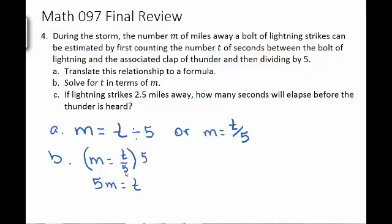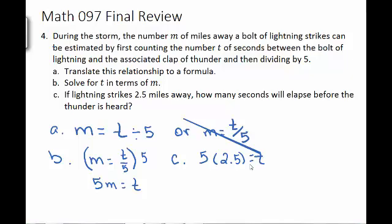Part c wants to know if the lightning strike is 2.5 miles away, how many seconds will it be? We know what m is and we're looking for t. So 5 times 2.5 equals t. And 5 times 2.5 is 12.5. So it would be 12.5 seconds.